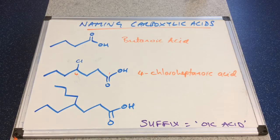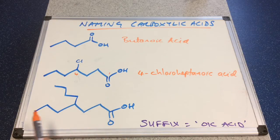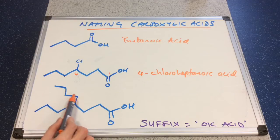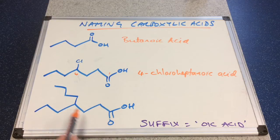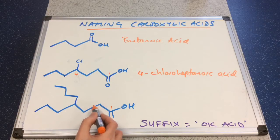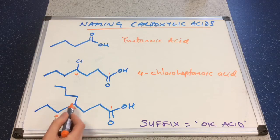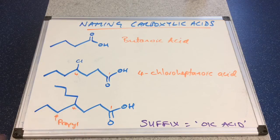The third one — let's check where the longest chain is. Counting one path gives seven carbons, but the other gives one, two, three, four, five, six, seven, eight. So this continuous carbon chain is the longest one — it's eight long. So this would be octanoic acid. Carbon number one, two, three, four. We're looking at this alkyl branch — how long is it? It's one, two, three carbons long, so this is a propyl group on carbon number four of octanoic acid. So it's 4-propyloctanoic acid.